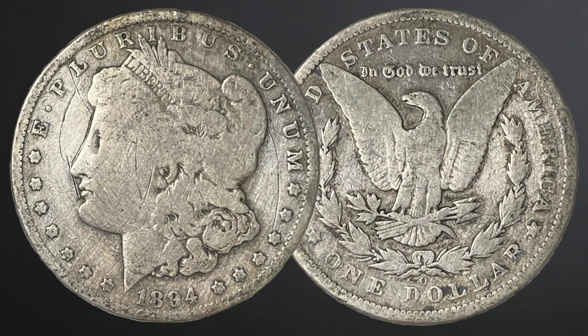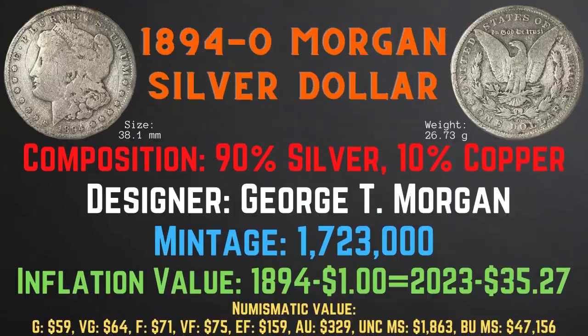Now let's take a look at the 1894-O Morgan silver dollar. It was minted in New Orleans. It has a size of 38.1 millimeters and a weight of 26.73 grams. It has a composition of 90% silver and 10% copper. Its designer was George T. Morgan. Its mintage is 1,723,000. Its inflationary value for the year 1894 is $35.27. It has a numismatic value ranging from $59 in good condition up to $47,156 in brilliant uncirculated mint state condition.